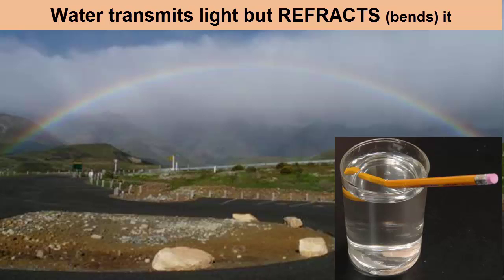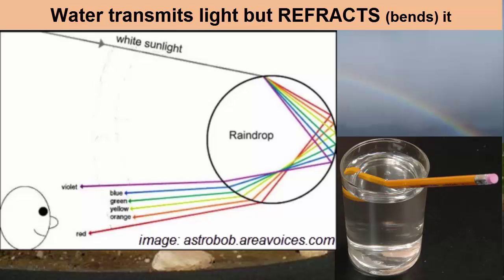This bending of light is also visible when we see a rainbow. In this case, the sunlight — white light that's composed of all colors of the spectrum: red, orange, yellow, green, blue, violet — bends as it travels through water droplets in the cloud.